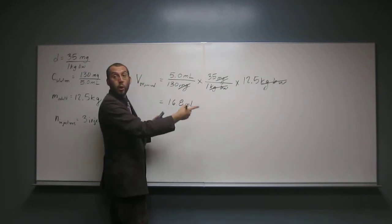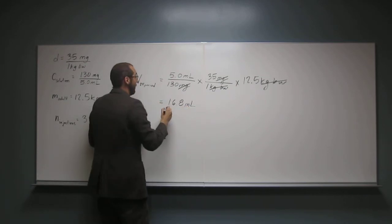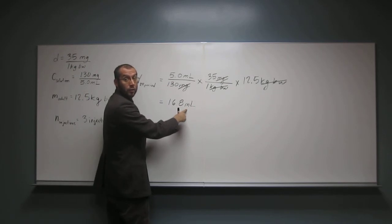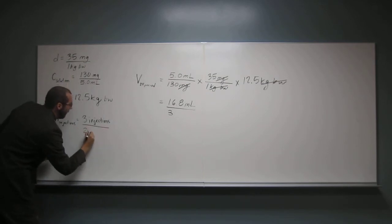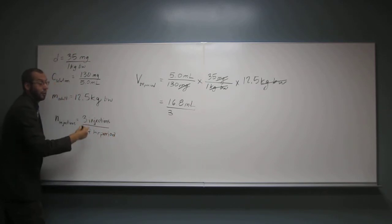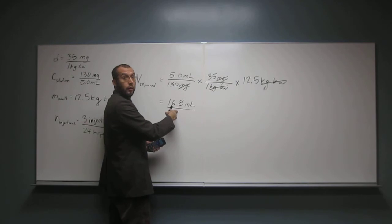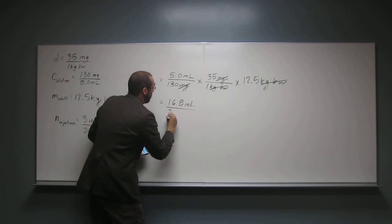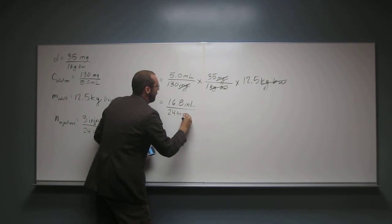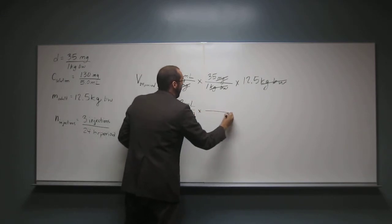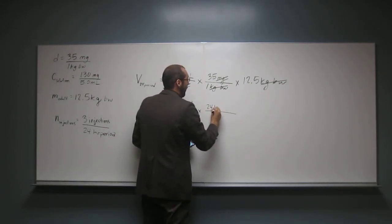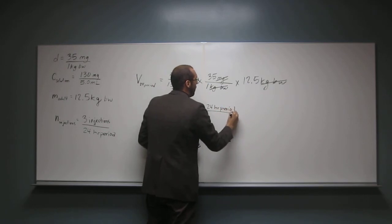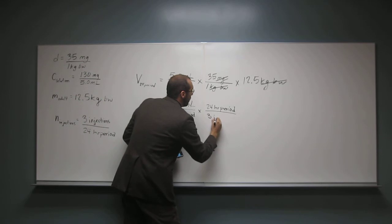So that's milliliters per three injections, per 24-hour period. Because that's for every 24-hour period. We've got three injections, so this is 16 milliliters per 24-hour period, and then multiply by this ratio here. We've got 24-hour period divided by three injections. So this will give us the volume per injection. Does that make sense? Because we're going to cancel out that.